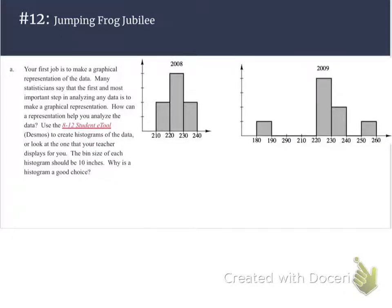All right, let's get going on problem number 12, Jumping Frog Jubilee. It says your first job is to make a graphical representation of the data. Many statisticians say the first and most important step in analyzing any data is to make a graphical representation, or a graph.